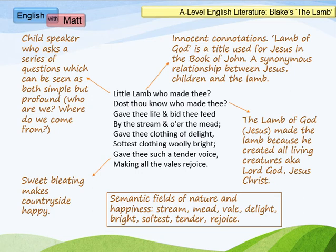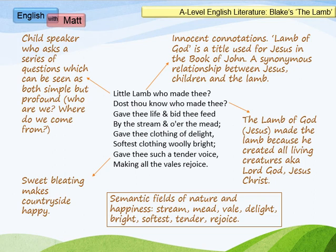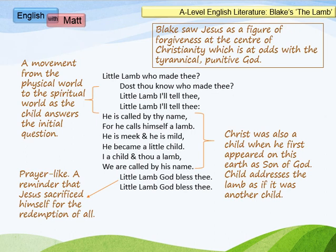It suggests there is a synonymous relationship between Jesus, children, and the lamb — a triangle between all these figures of purity, innocence, and goodness. The Lamb of God, i.e. Jesus, made the lamb because he created all living creatures — he is the creator, Lord God Jesus Christ. That's the answer to the riddle. There is a sense that the tender voice is the sweet bleating which makes the countryside happy and the vales rejoice. Typical of Blake to personify nature in terms of happiness and merriment. As we move into the second half of the poem, we get the answers to the questions — whereas in The Tiger we don't, here we kind of do.